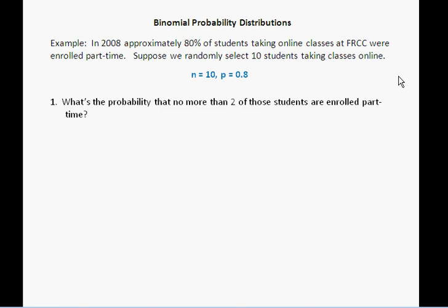The wording here, no more than 2, translates into x values of 0, 1, or 2. And what we need to compute is this quantity, the sum of the probabilities of x equals 0, x equals 1, and x equals 2. Now, how binomial CDF works is this.